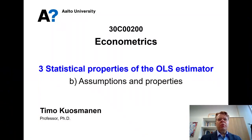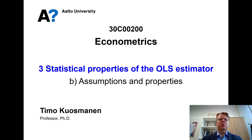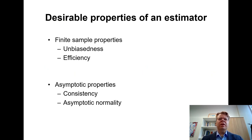We are discussing the statistical properties of the OLS estimator, and the properties depend on the assumptions we are willing to make. The purpose of this lesson is to give an idea of what kind of desirable properties there could be, and I'll also review the assumptions of the Wooldridge textbook about the OLS estimator. My purpose here is not to have an exhaustive list but to give you a flavor of how an econometrician would think about the properties.